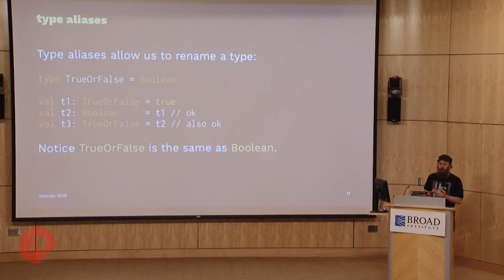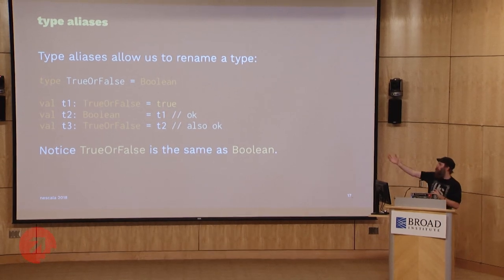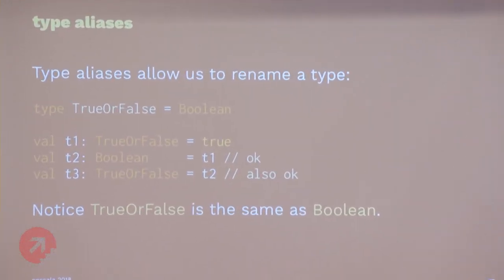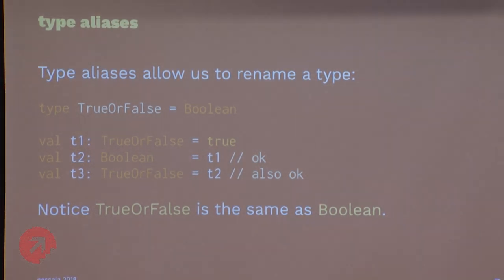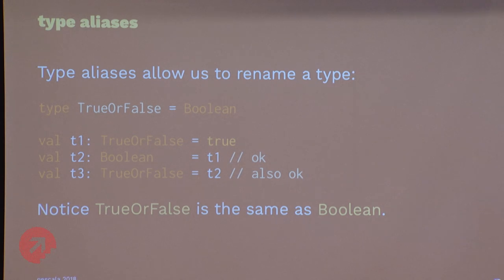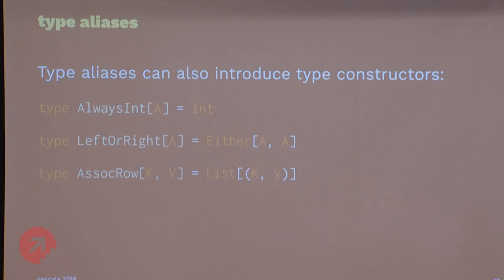Type aliases allow us to give a new name to a type. Here we've got Boolean and I gave it the name TrueOrFalse. You can go back and forth between these types — they're equivalent, interchangeable. No new type is being introduced. It's confusing that when you use the type keyword you might imagine you're introducing a type, but you're not — you're saying this type is equivalent to the right-hand side. Type aliases can also introduce type constructors, for example one that throws away its argument and always returns Int.